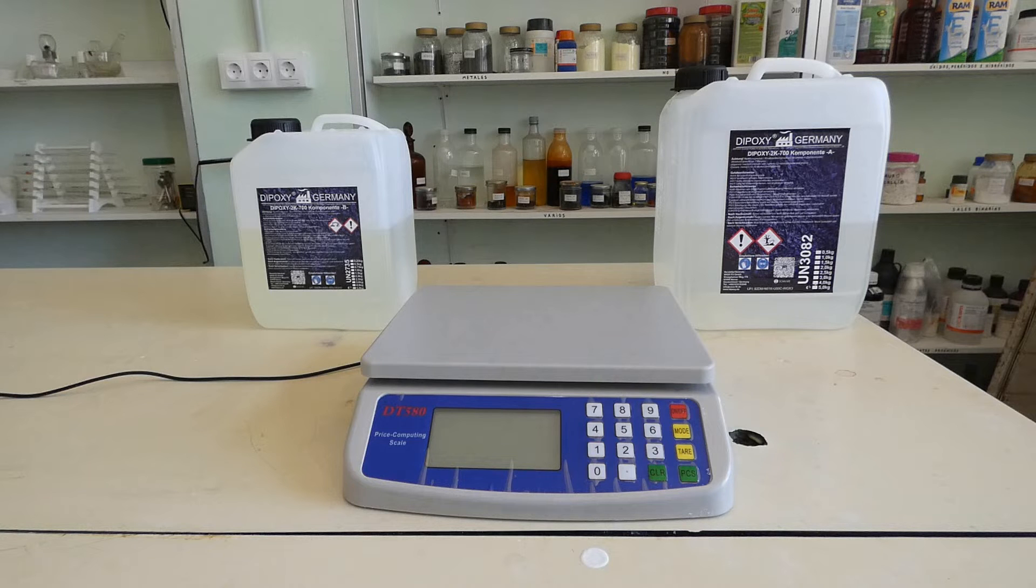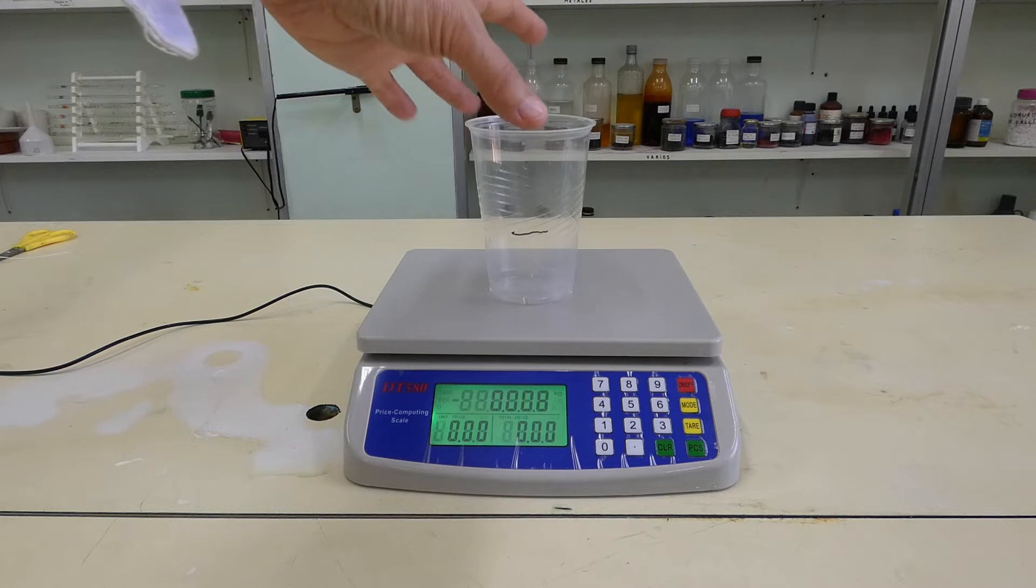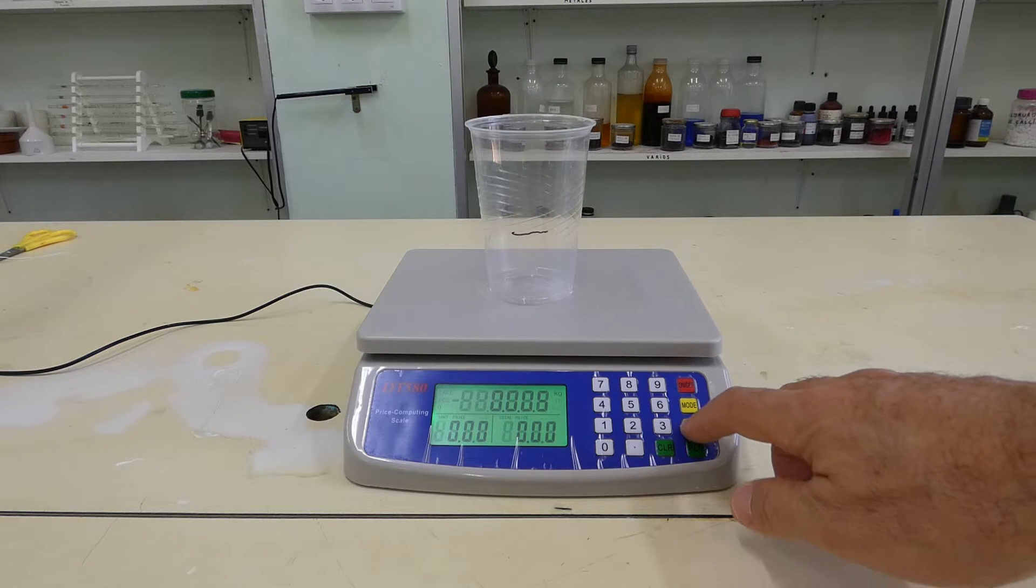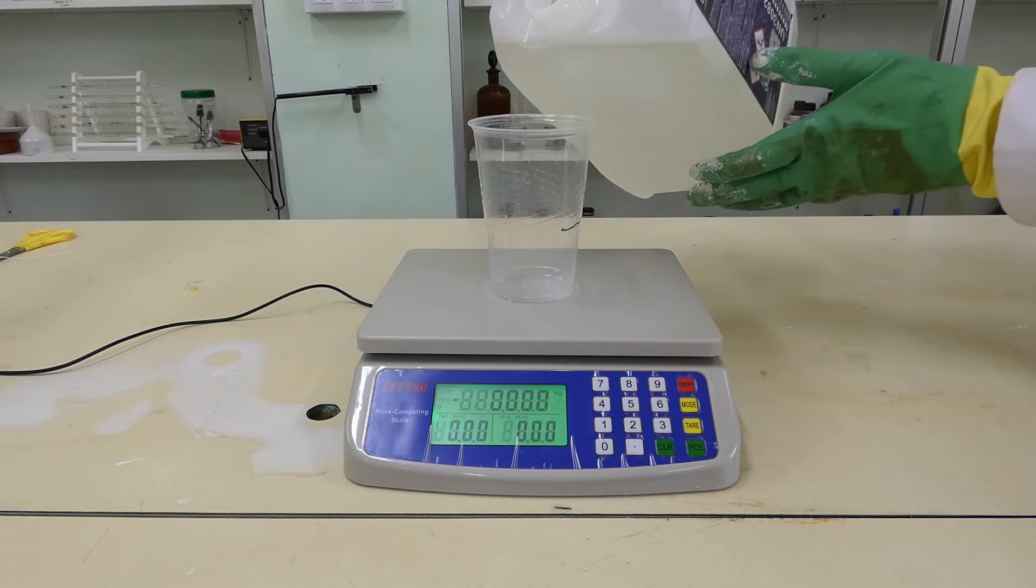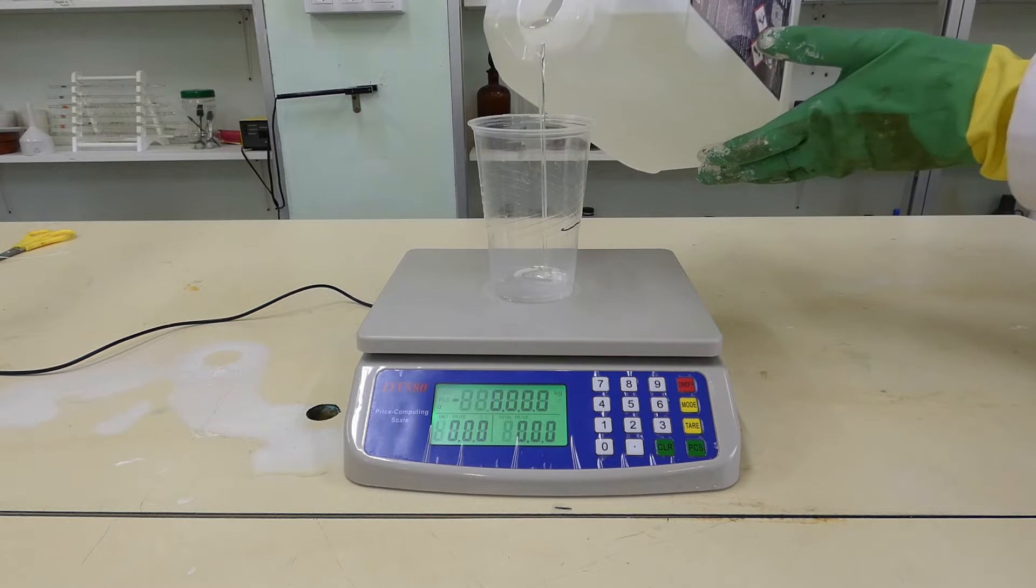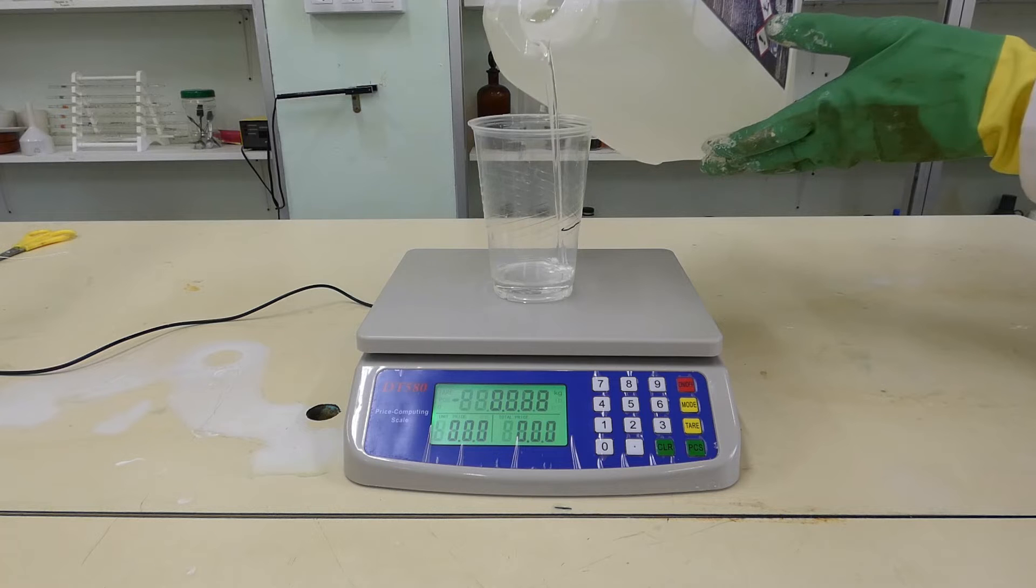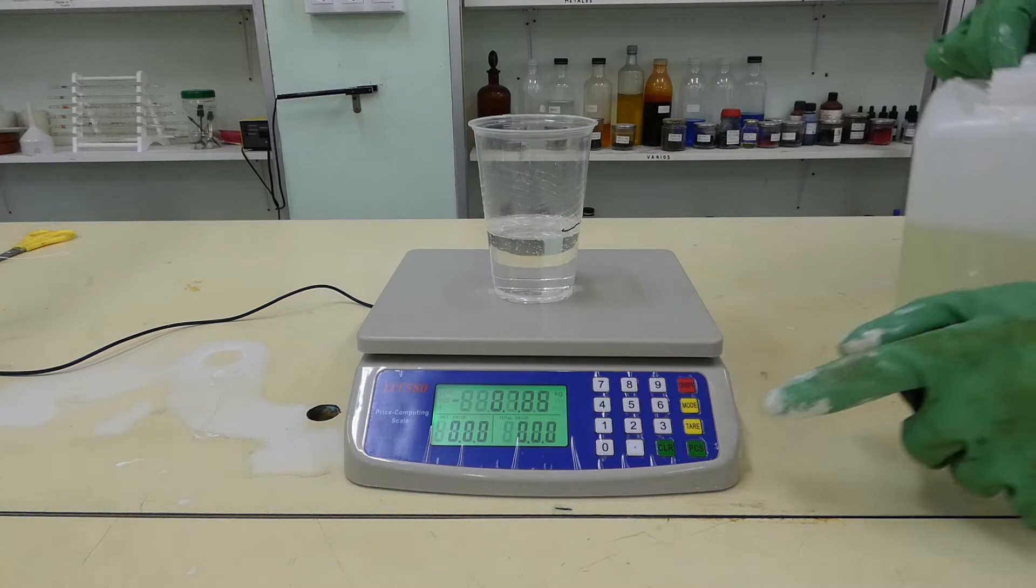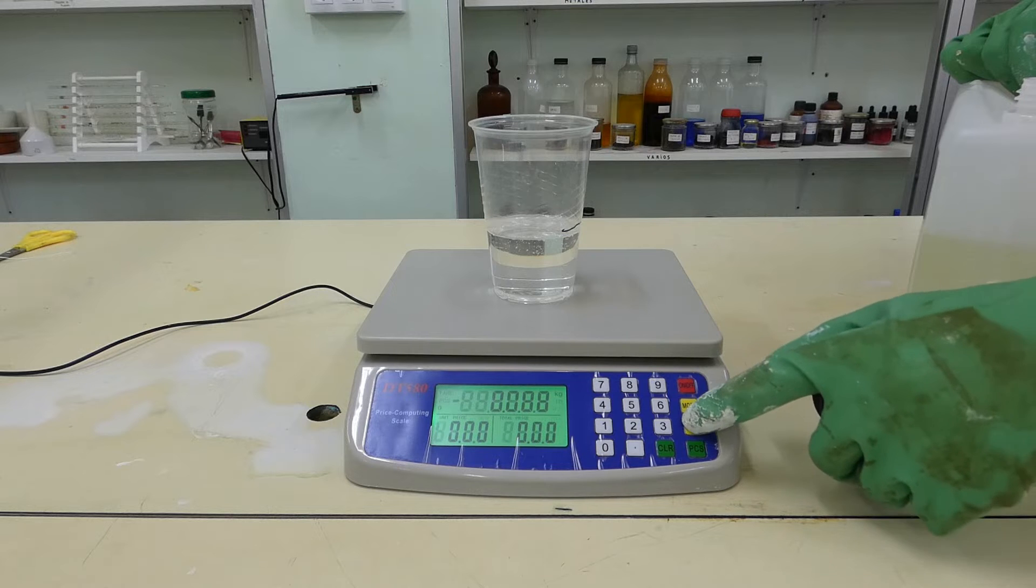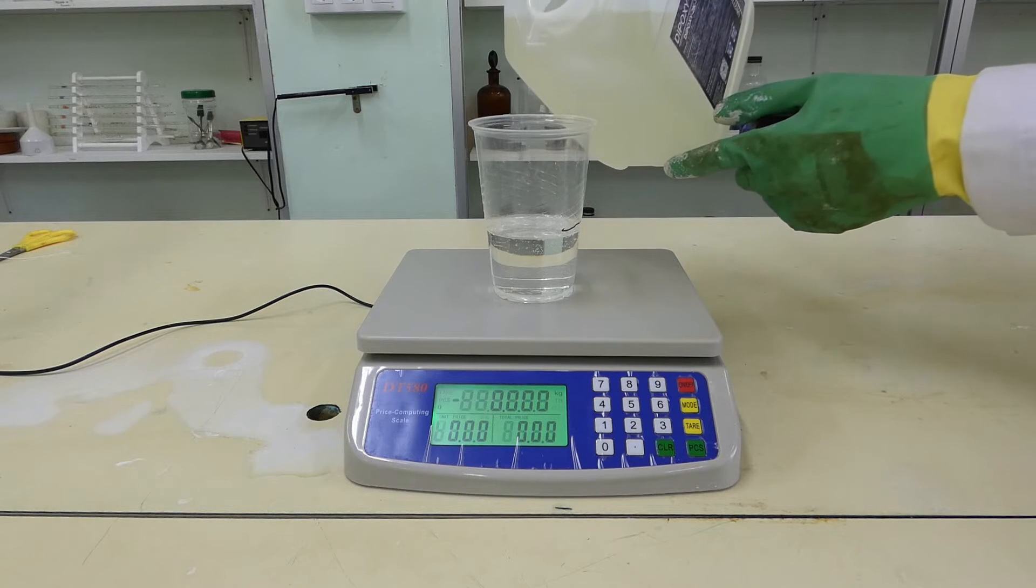Our polymerization needs a component A and a component B. In a glass, add a certain amount of component A and half by mass of component B.